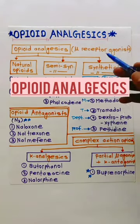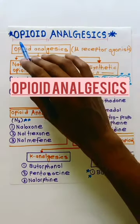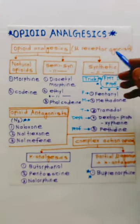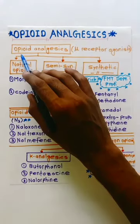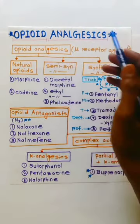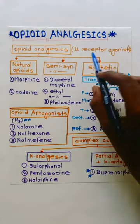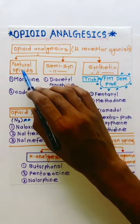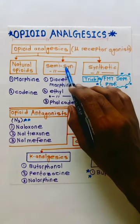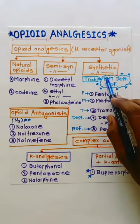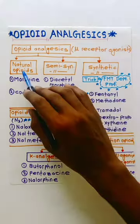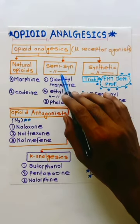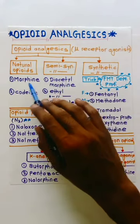Hello guys, I am Sudarshan. Today's topic is opioid analgesic drugs — classification. Opioid analgesics, or mu receptor agonists, are divided into natural opioids, semi-synthetic opioids, and synthetic opioids. In natural opioids we have morphine and codeine. In semi-synthetic opioids,